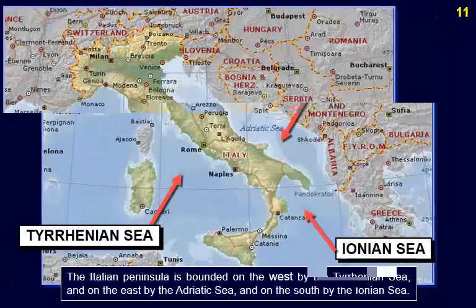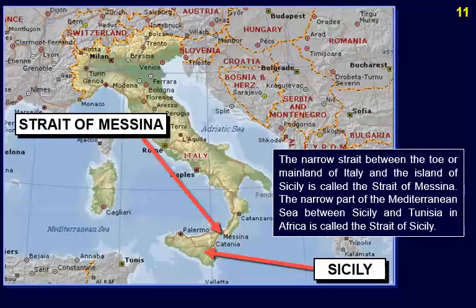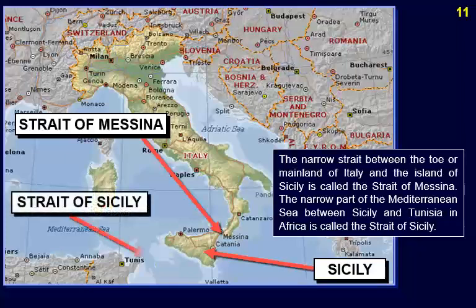The narrow strait between the toe of mainland Italy and the island of Sicily is called the Strait of Messina. The narrow part of the Mediterranean Sea between Sicily and Tunisia in Africa is called the Strait of Sicily.